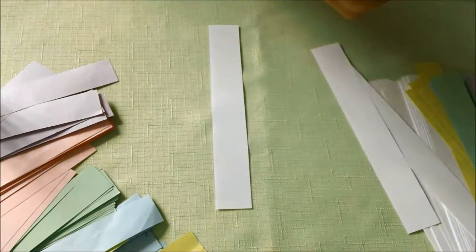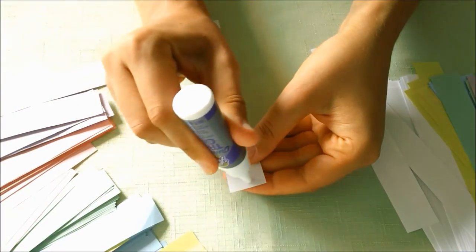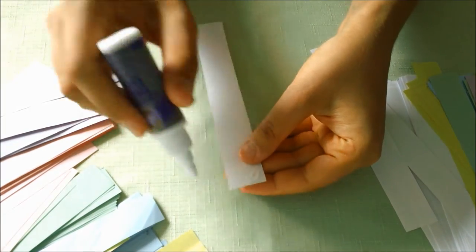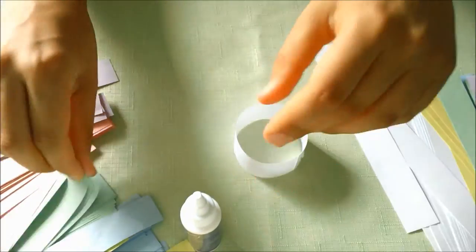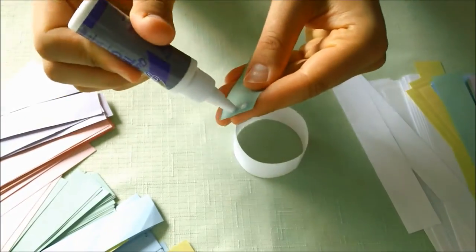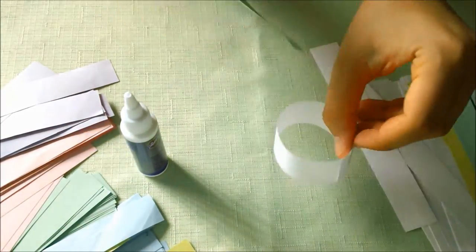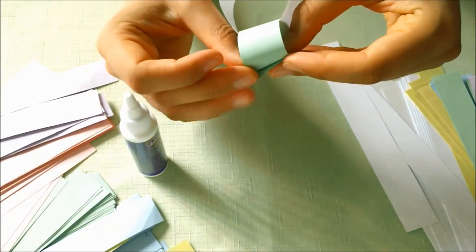Now the second set of chains have to be slightly longer than the first ones as we gradually come closer to the middle of the triangle. Again, mix and match the colors and sizes of the paper strips and create four of these slightly longer chains.